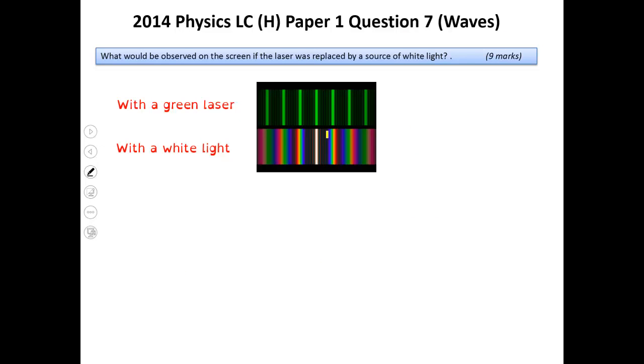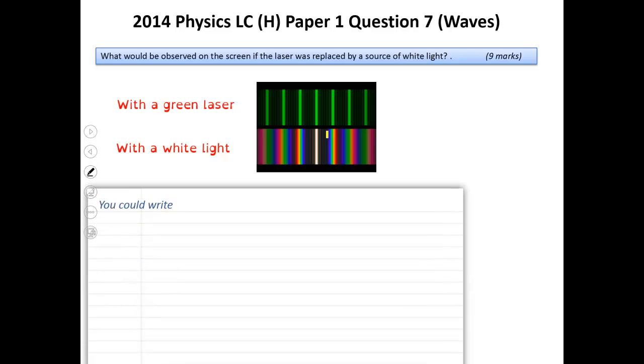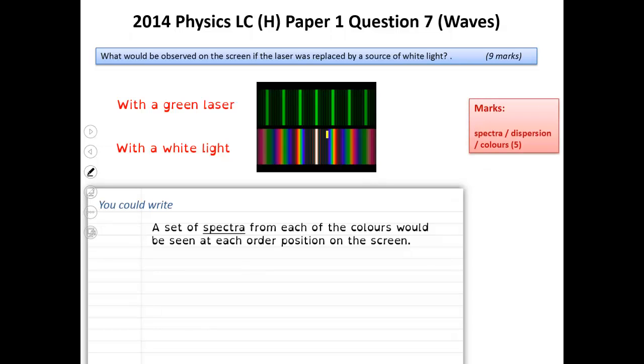What would you see on the screen if the laser was replaced by a white light source? With a green laser, that's what you see, similar with a red. With a white light source, if you got a red laser and a green laser and a blue laser and you sellotape them all together, you pretty much have a white light source. So it kind of makes sense that you would see them all slightly spread out. You'd see a spectrum or a spectra. So a set of spectra from each of the colours would be seen in each of the order positions on the screen. All they wanted there in the marking scheme was to mention spectra. You could say dispersion as well, splitting up the colours.